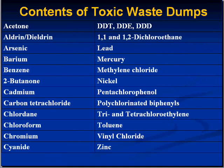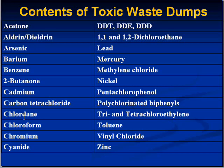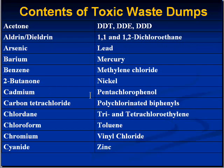Speaking of the environment, if you've ever wondered about toxic waste dumps — we all hear the term — a list of the common things stored in hundreds of toxic waste dumps in our country goes from A to Z, acetone to zinc. Compounds include aldrin, arsenic, barium, benzene, butanone, cadmium, many heavy metals, carbon tetrachloride, things used chiefly industrially which are not easily biodegraded — chlordane, chloroform, chromium, cyanides, pesticides like DDT, dichloroethanes, lead, mercury, methylene chloride, nickel, pentachlorophenol, polychlorinated biphenyls, tri- and tetrachloroethylene, toluene, vinyl chloride, and zinc. What they all share is that they're not easily converted or biodegraded into non-toxic compounds, so they have to be stored — that's why we have toxic waste dumps.